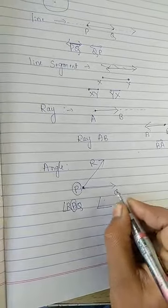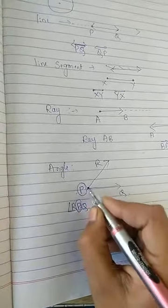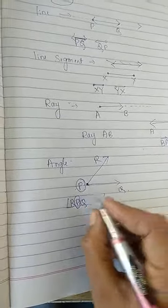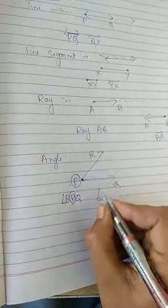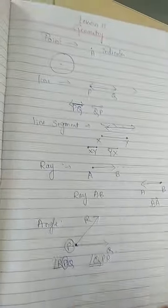Or we can also write Q, P, R, R, P, Q. But vertex should be middle. Where the common end point is there, that should be always written middle. Q, P, R. This is about the basics.